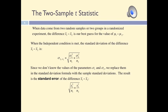But to conduct any of these procedures, we must also know the standard deviation of this difference in the population. The formula for the population standard deviation of the difference can be obtained by dividing the squared standard deviation of each population by the sample size, adding the results of the two divisions, and then taking the square root of the sum. However, we can only compute this if we know the standard deviation of the populations, the sigmas. So this is the formula that we would use with z-procedures.